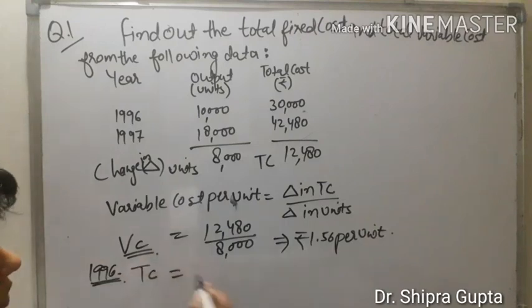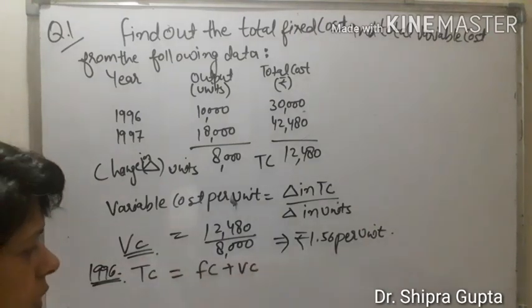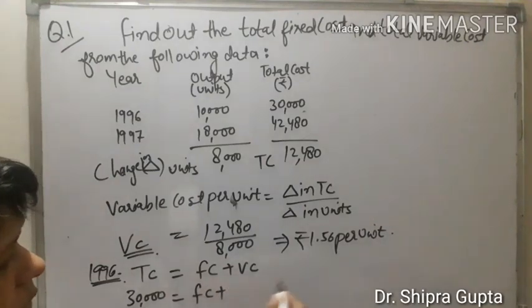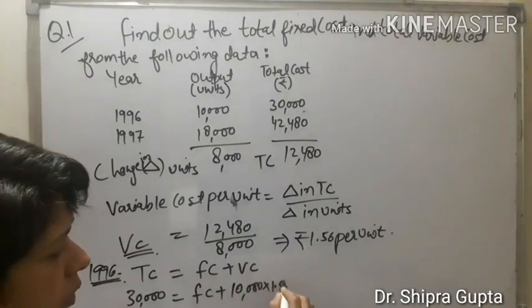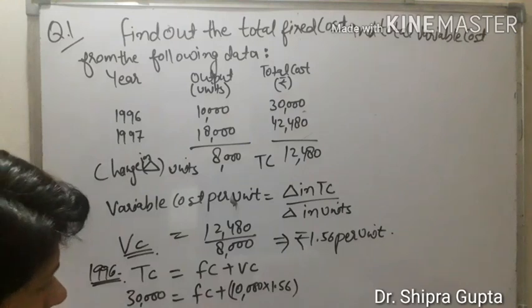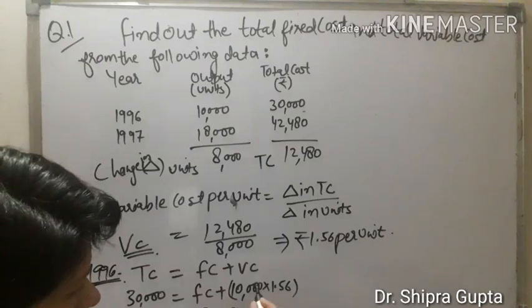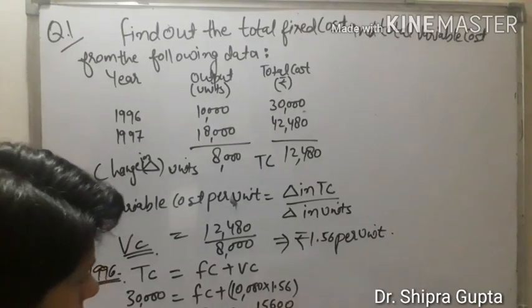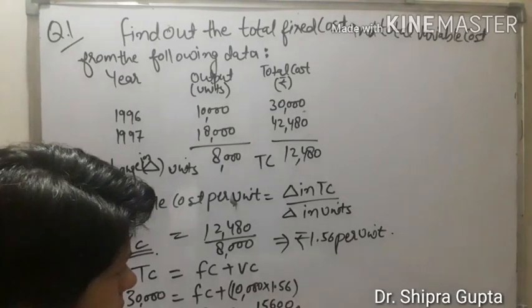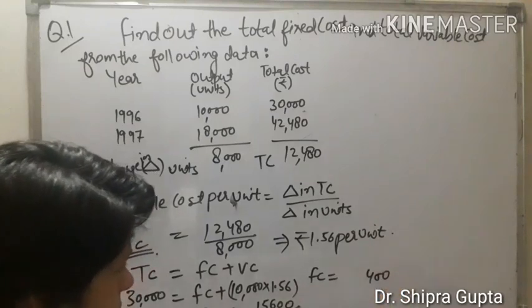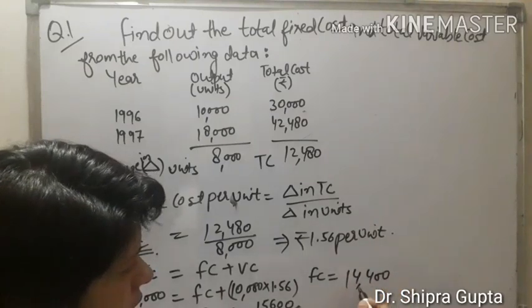Total cost equals fixed cost plus variable cost. We will take total cost 30,000. Fixed cost we don't know. Variable cost per unit is 1.56, but units are 10,000, so multiply 1.56. Fixed cost equals 30,000 minus 15,600. After deducting, fixed cost equals 14,400 rupees.